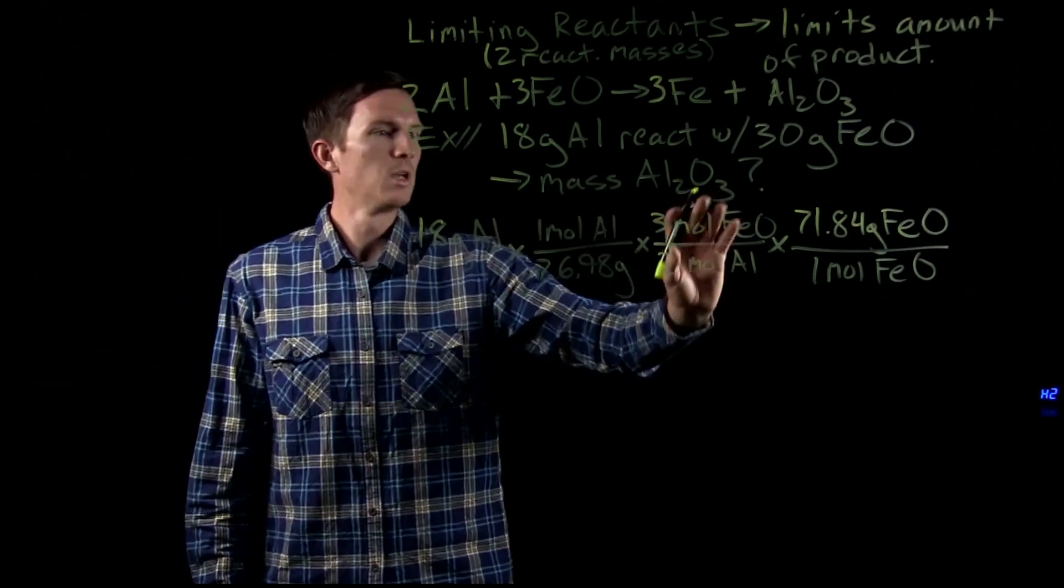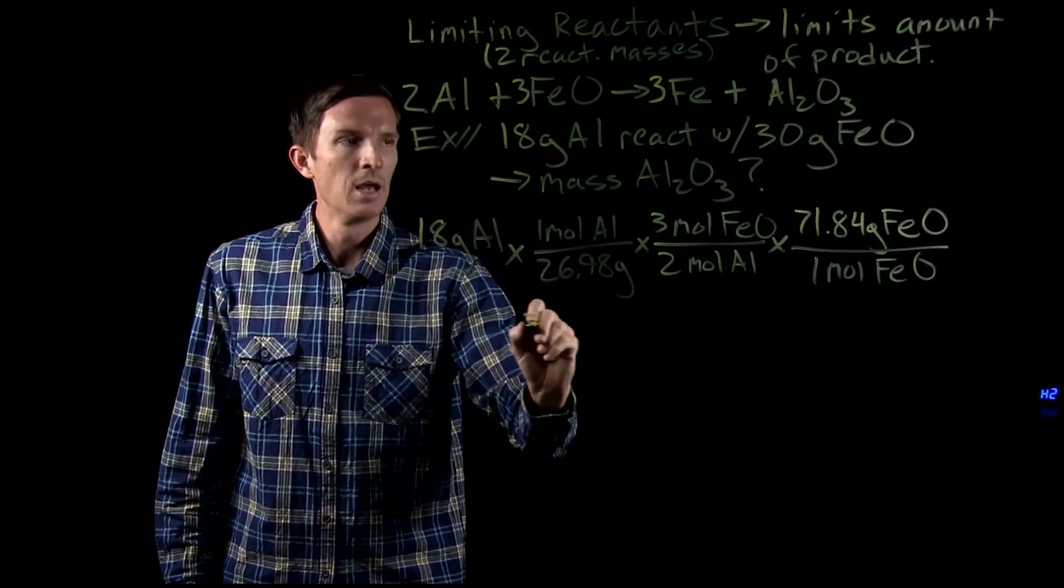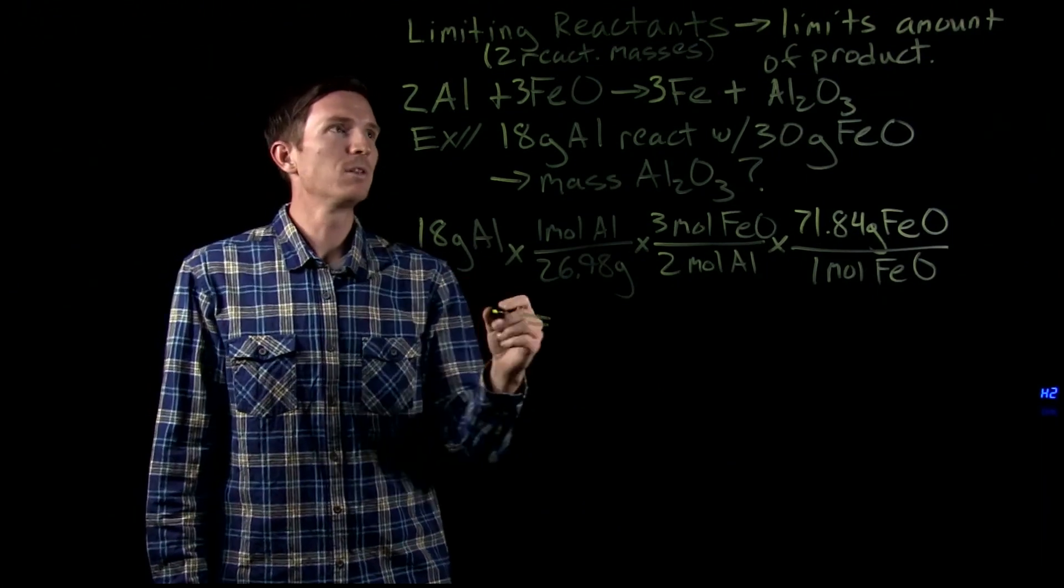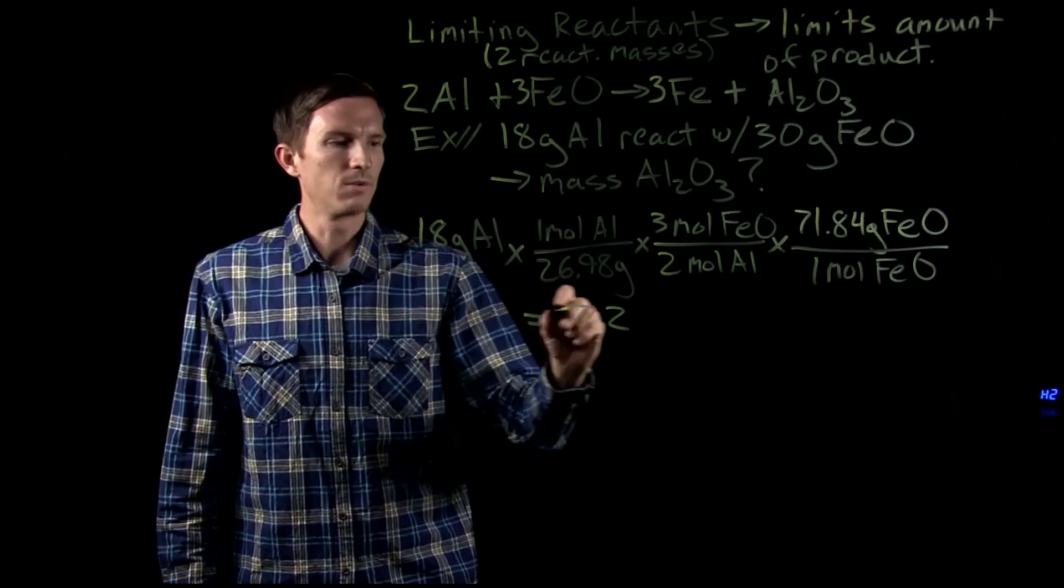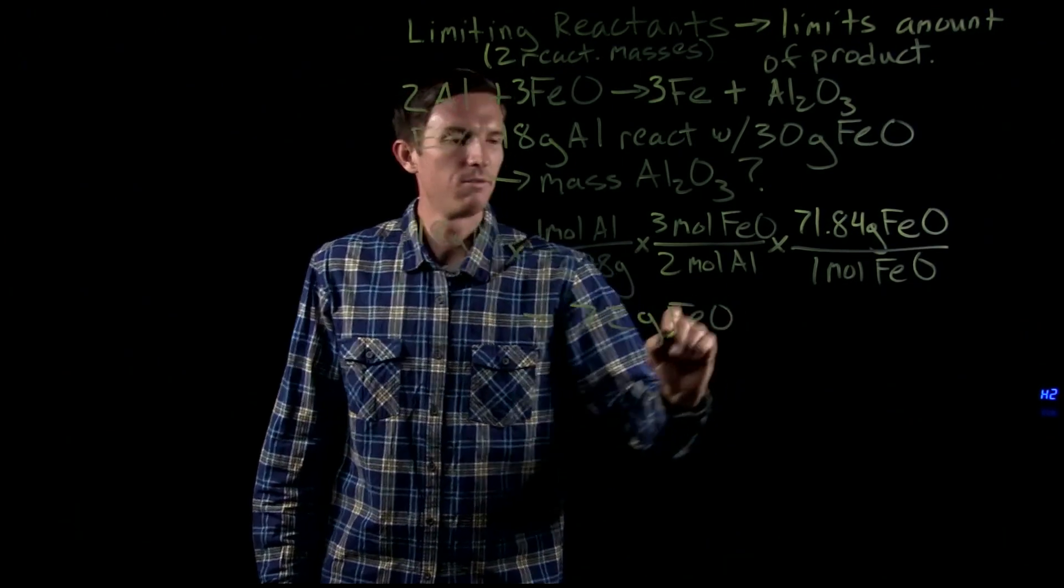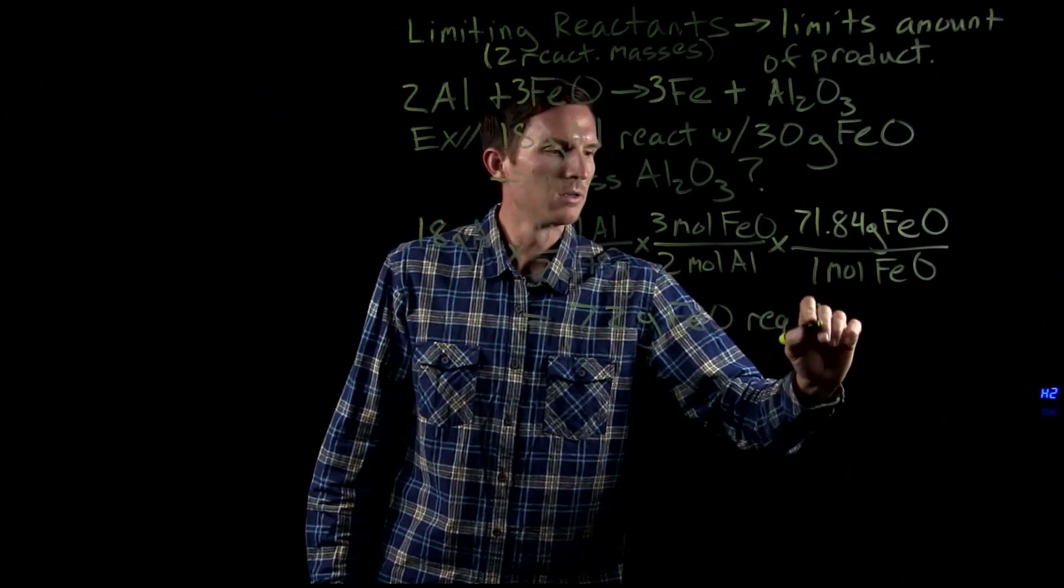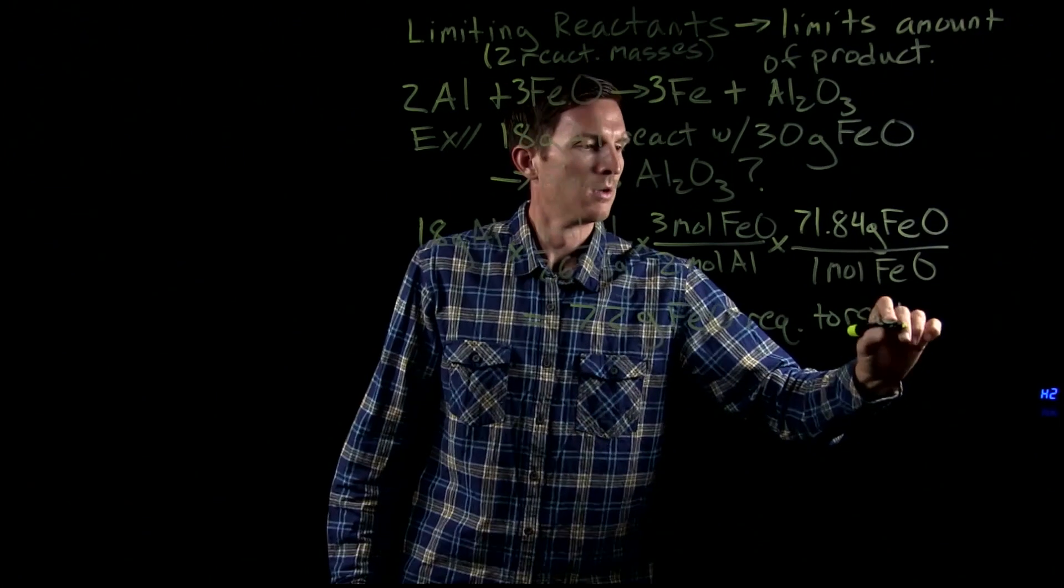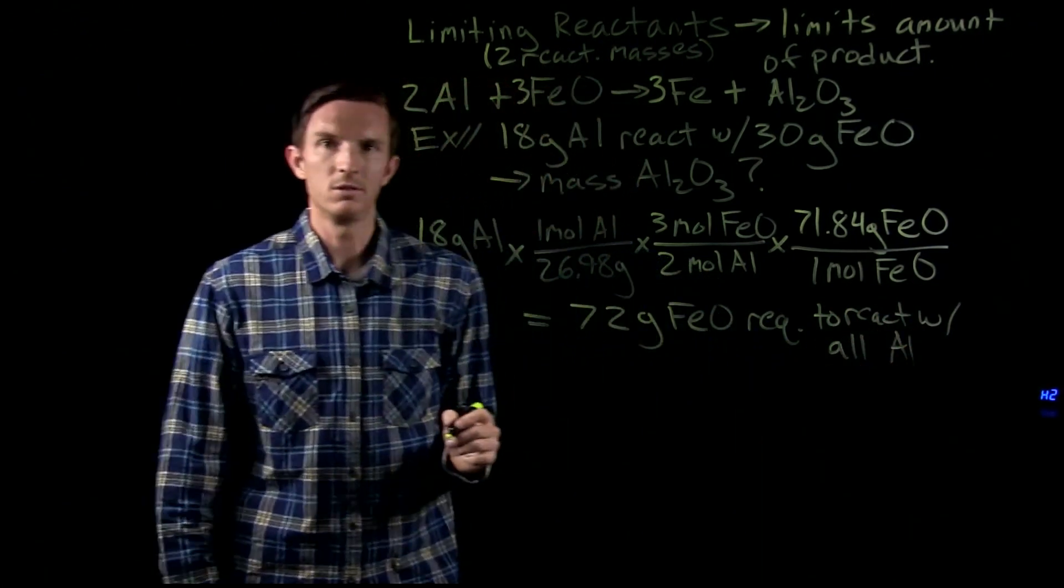So we've converted mass to moles, moles of aluminum to moles of iron oxide, to finally mass. And so what we would find is that after this calculation is over, we need 72 grams of our iron oxide required to react with all of that aluminum we start with.